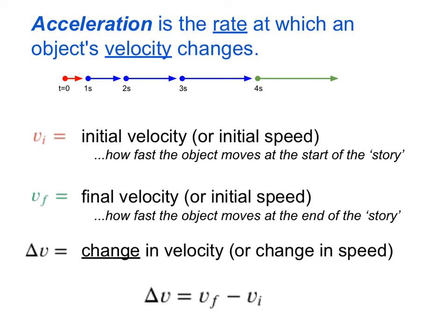Well, first of all, we would need to define a few things. If the object's velocity is changing, then there's a starting velocity and an ending velocity. And in physics, we use the terms initial and final instead of start and end. So the initial velocity or the initial speed is how fast the object moves at the start of the problem or sort of whatever story we're telling about this object.